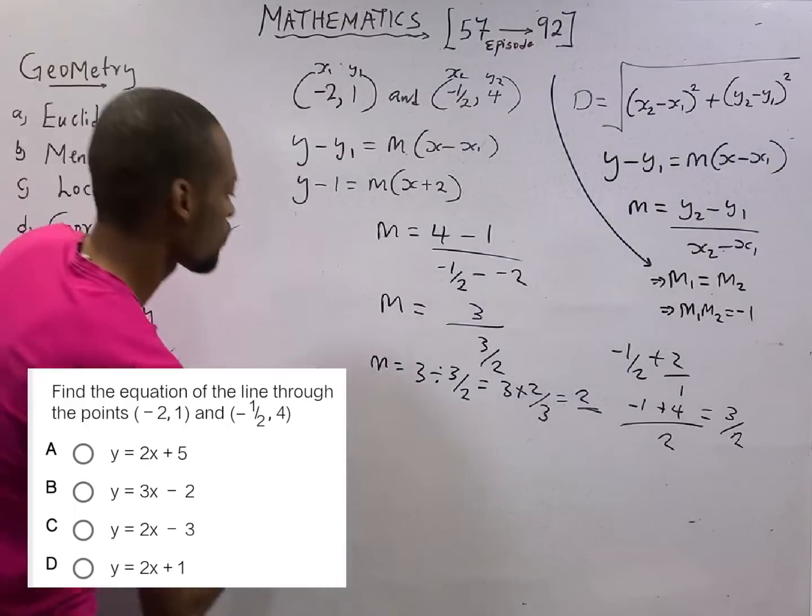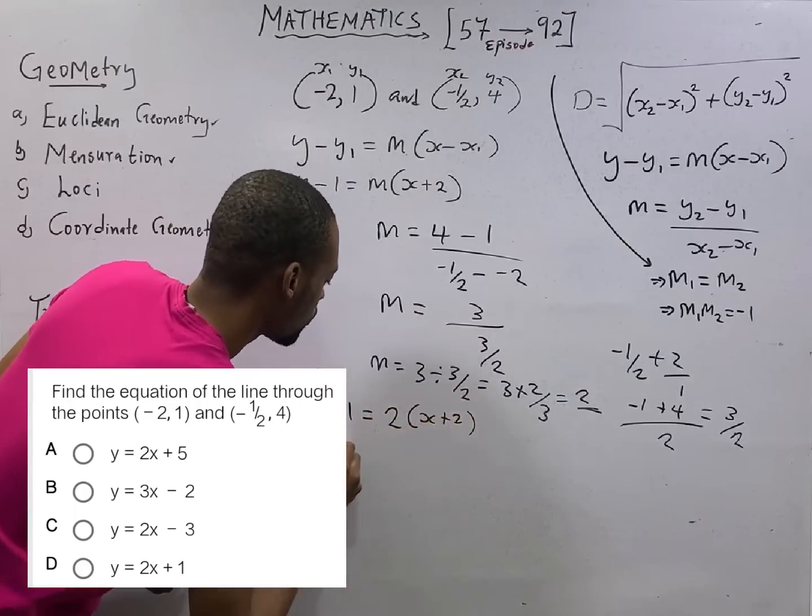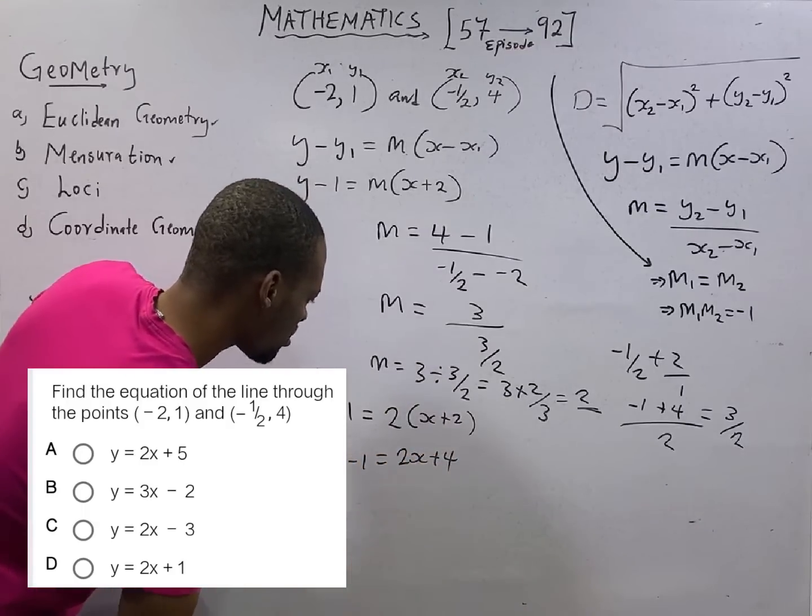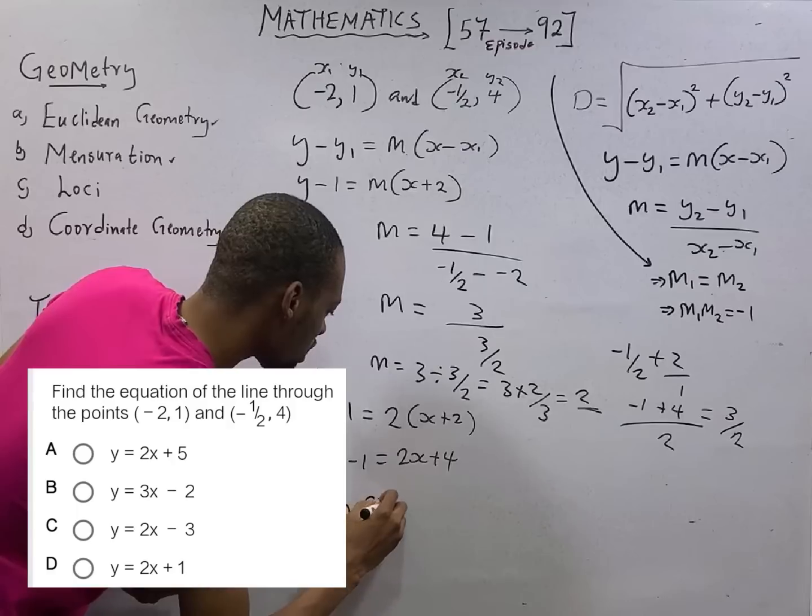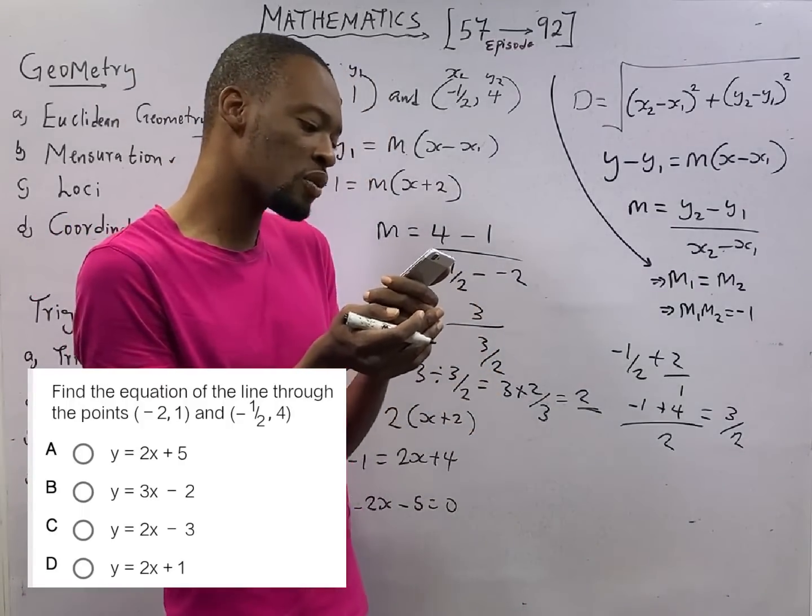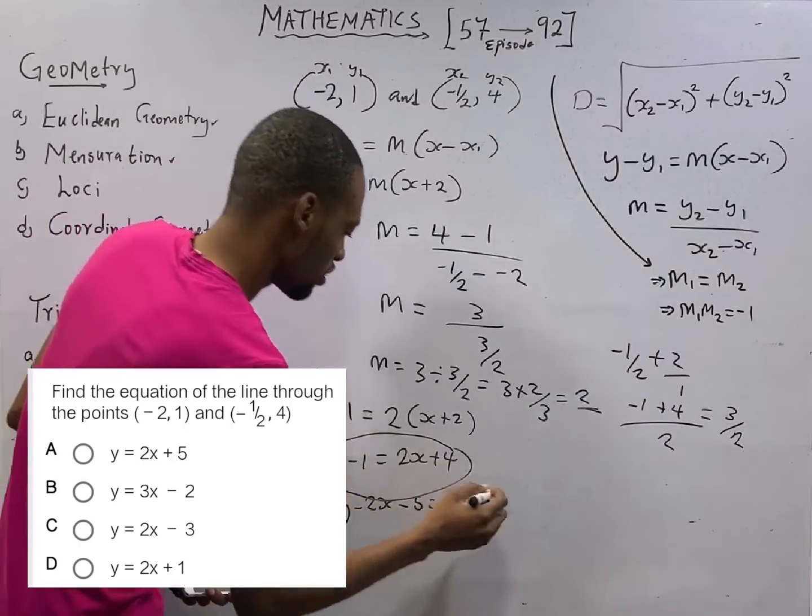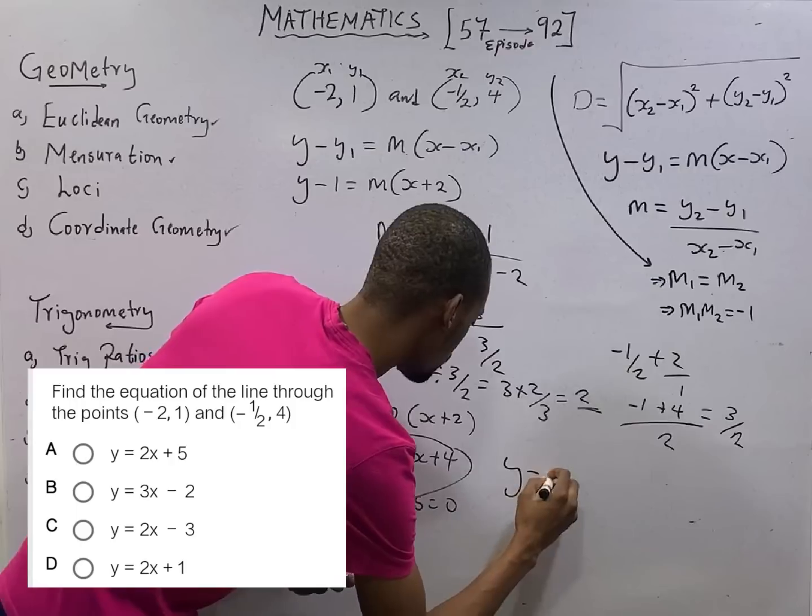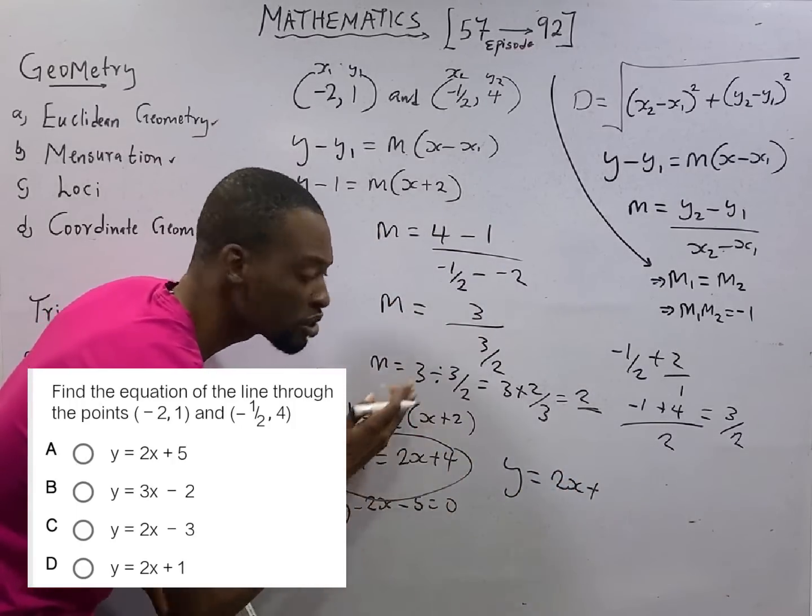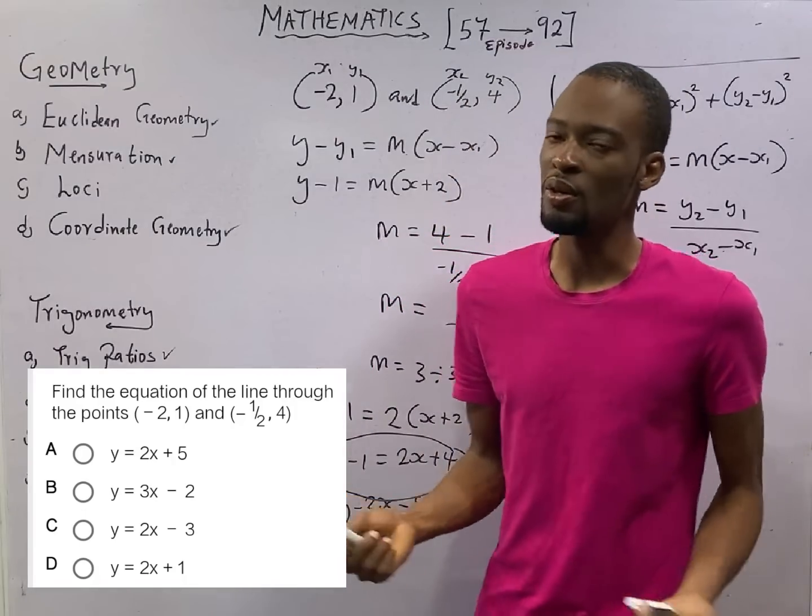So life made easy. y minus 1 equals 2x plus 2. y minus 1 equals 2x plus 4. So rearranging, y minus 2x minus 5 equals 0. Let's see the form the option comes. y equals 2x plus 5. From here, if this minus 1 goes to meet 4, it becomes plus 1. So 4 plus 1 is 5. y equals 2x plus 5. That makes a lot of sense.